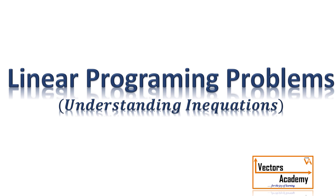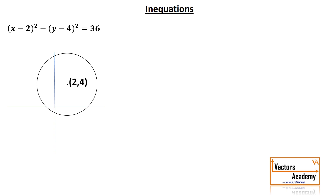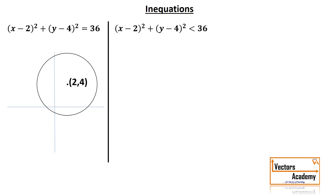Before going on to inequations, let us look at this equation: (x-2)² + (y-4)² = 36. Can you recall this equation? This equation represents a circle with center (2,4) and radius 6. This is an equation of a circle in center-radius form. Now let us convert this equation into an inequation — the equal to sign has changed to the less than sign. This is called an inequation.